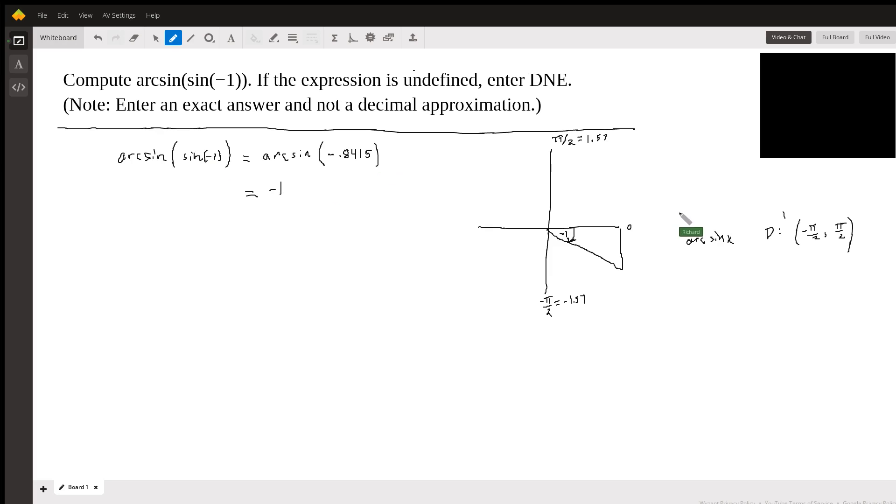If I wanted the angle whose sine is negative 0.8415, it could also be in the third quadrant. And if it's in the third quadrant, that is outside the domain of the inverse sine. And so you have to be careful about how that's going to work. But in this case, we're in the domain, and so we don't have to worry.